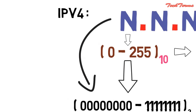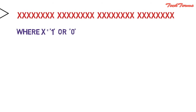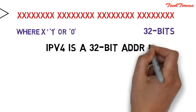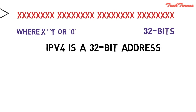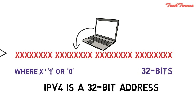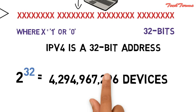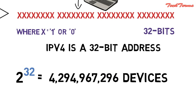Since each number is represented by a group of 8 binary digits, the whole IPv4 address is represented by a sequence of 32 ones and zeros, or simply by a sequence of 32 bits. So IPv4 is a 32-bit address. In IPv4, a unique sequence of ones and zeros is assigned to each computer. Therefore, a total of 2 raised to the power 32 devices — that is approximately 4 billion devices — can be addressed and connected to the internet with IPv4.